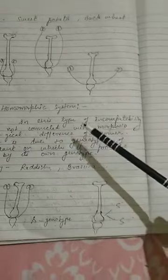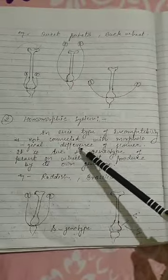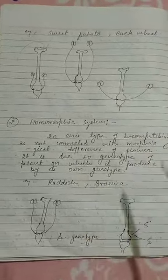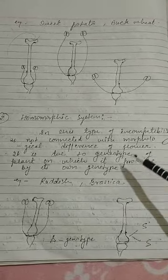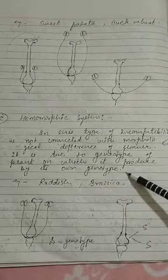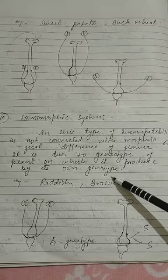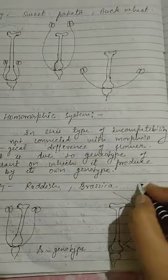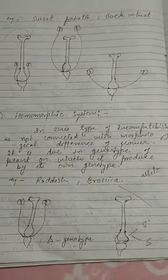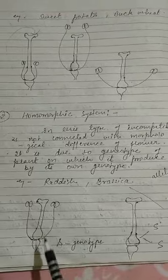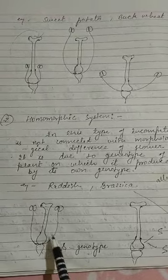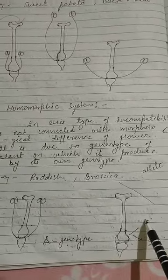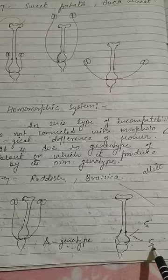The second type is the homomorphic system. In this type of incompatibility, it is not connected with morphological differences — there are no morphological differences created here. Instead, it depends on the genotype of the plant; it is determined by its own genotype, meaning it is genetically dependent. For example, one flower may have a recessive 's' genotype and another may have a dominant 'S' genotype.